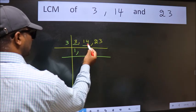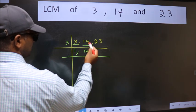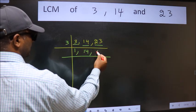The other number 14 is not divisible by 3 so we write it down as it is. The other number 23 is not divisible by 3 so we write it down as it is.